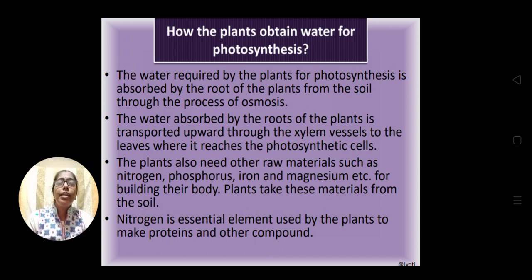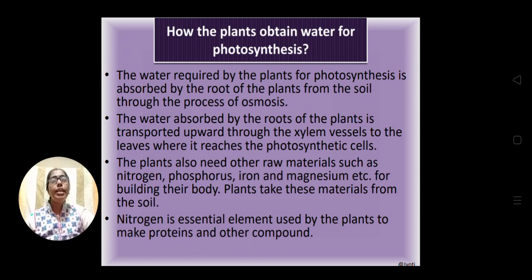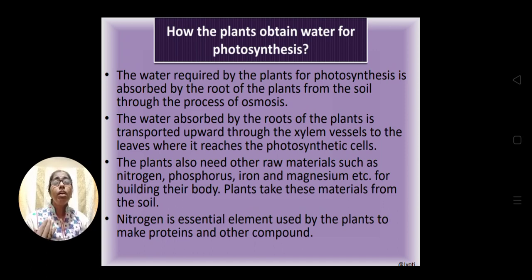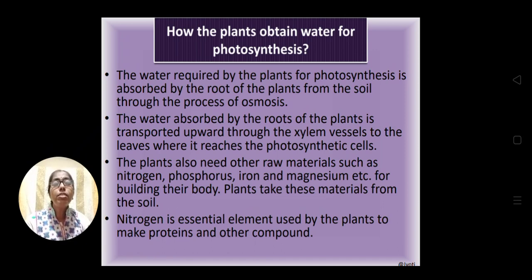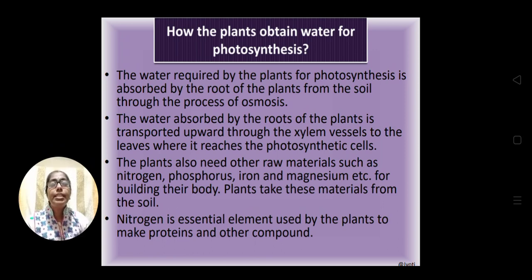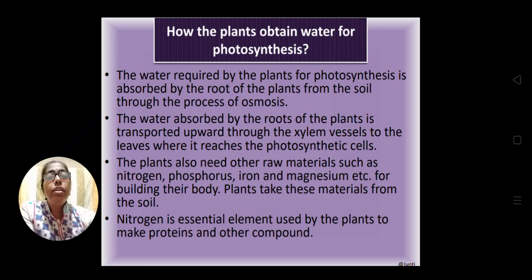Through these tubular structures, water is transported to the leaves for the purpose of photosynthesis. Along with water, minerals are also carried to the leaves, which are required for the full process of photosynthesis. These minerals are also essential for other plant activities — for example, nitrogen obtained from the soil is essential for making proteins and other compounds. This is how the plant obtains water from the soil.